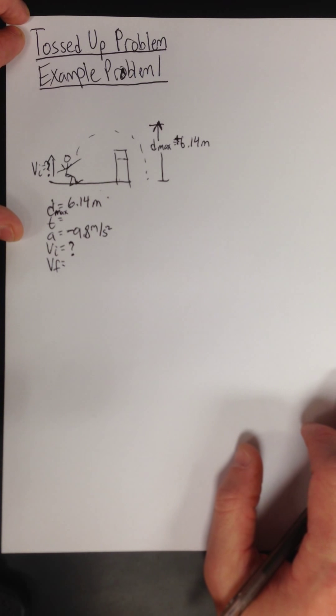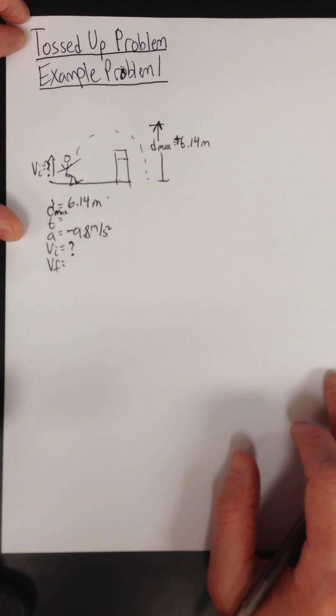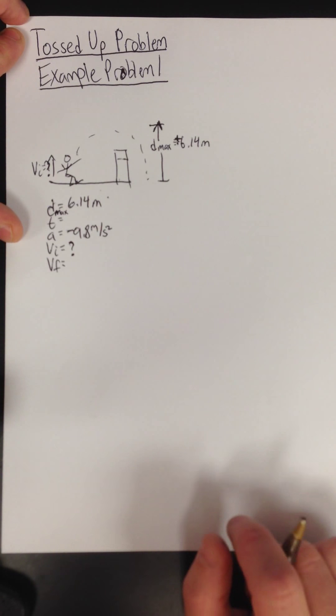So finally, to solve this problem, right now we don't have enough givens to proceed. We have distance and acceleration. We need a third number to plug into our kinematic equations before we can solve for VI, the speed he pushes off the ground with.